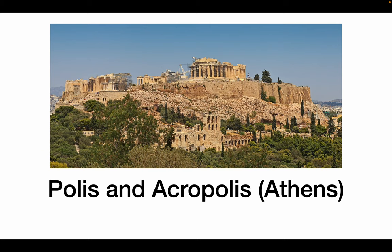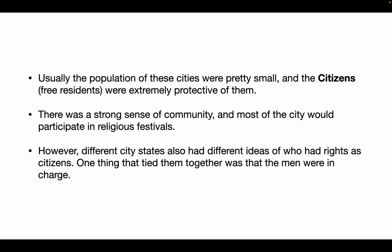Here we see the acropolis of Athens with the temple to Athena up at the top. Usually the population of these cities is pretty small — there just wasn't enough room and space. It was mainly focused around the people who lived there and who were born there, who were seen as citizens, the free residents of these areas. Citizens were very protective and fiercely independent, so they didn't often trust foreigners. There was also a very strong sense of community, usually surrounding religion. Different Greek city-states also had different levels of rights depending on how much of a citizen you were, how new a citizen you were, and whether your parents were citizens as well.